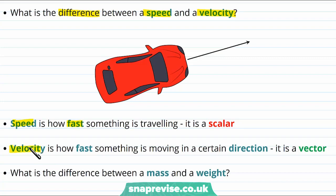The velocity, on the other hand, gives us a bit more information. It tells us how fast something is moving in a certain direction. And it is therefore a vector. And that's because it has a magnitude or size, that is how fast it is, and it has a direction.